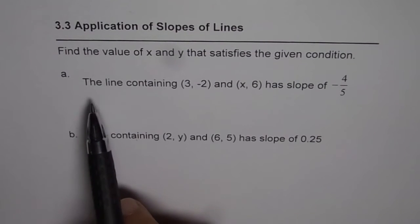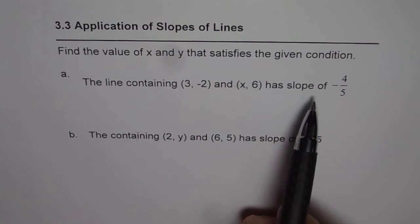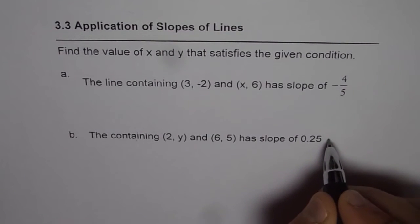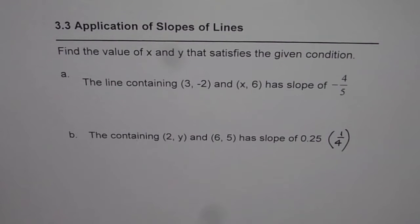Part A: the line containing (3, -2) and (x, 6) has slope of -4/5. Part B: the line containing (2, y) and (6, 5) has slope of 0.25. You can write 0.25 as 1/4, right? So 1/4 is also 0.25.